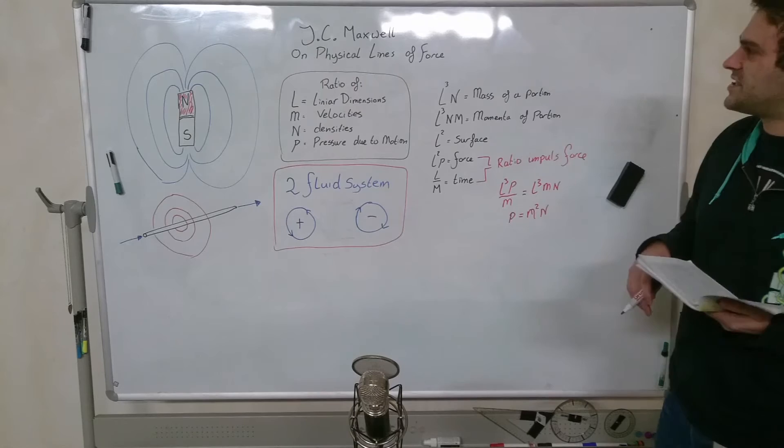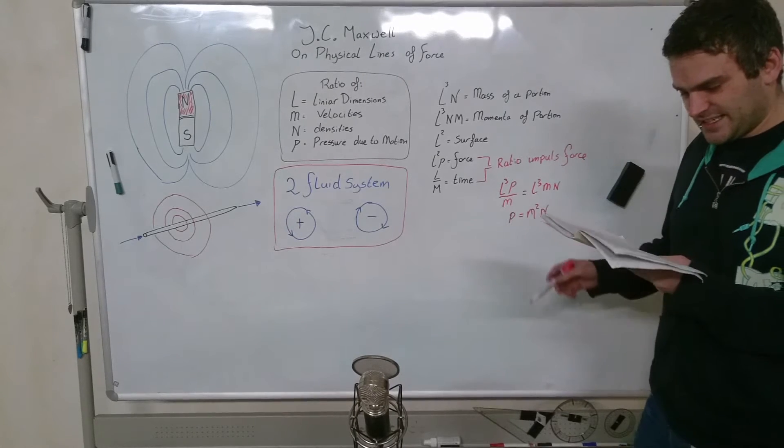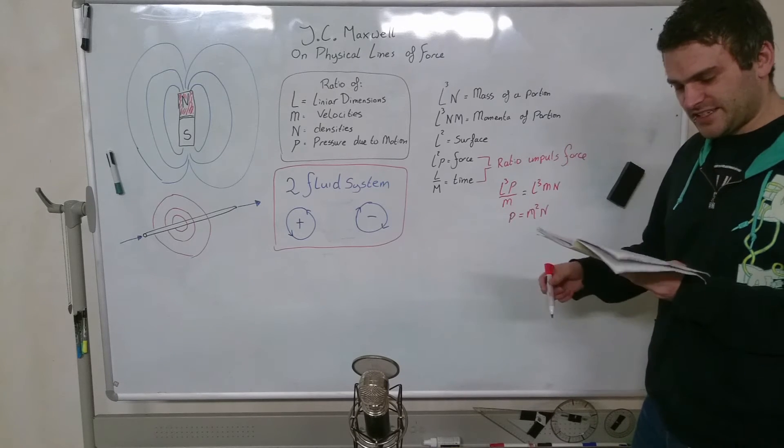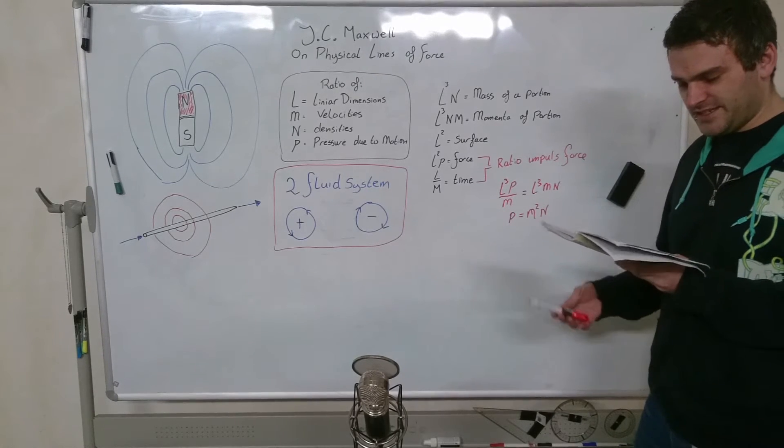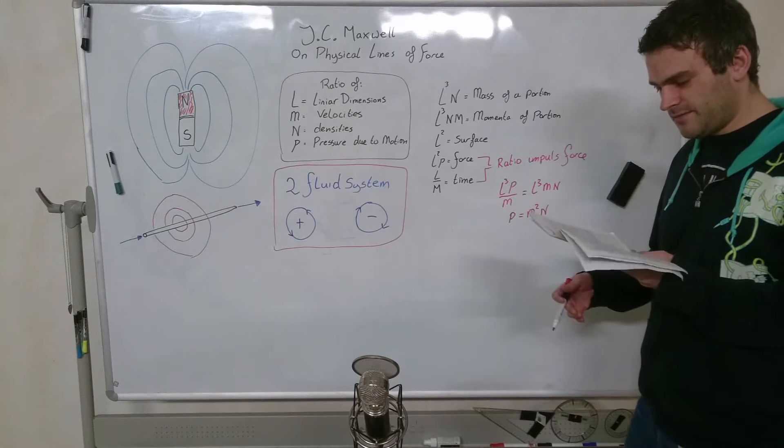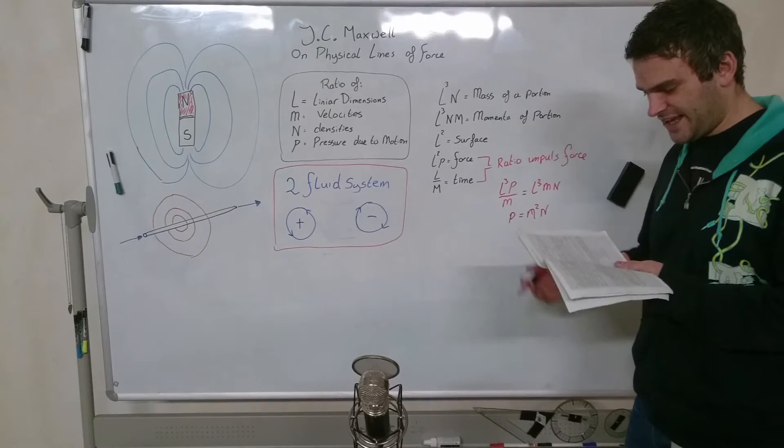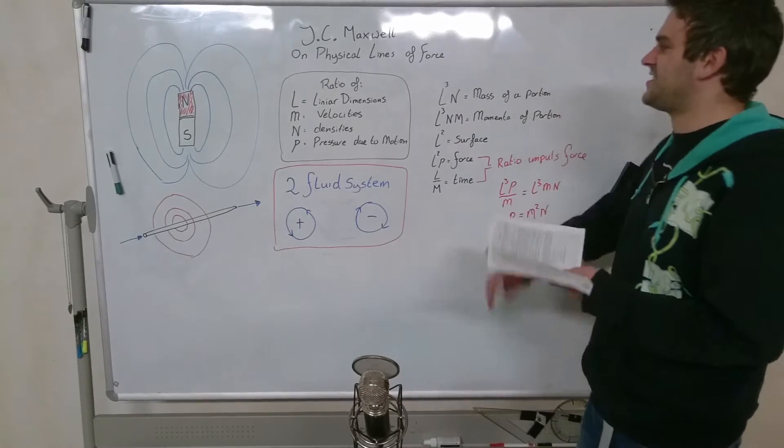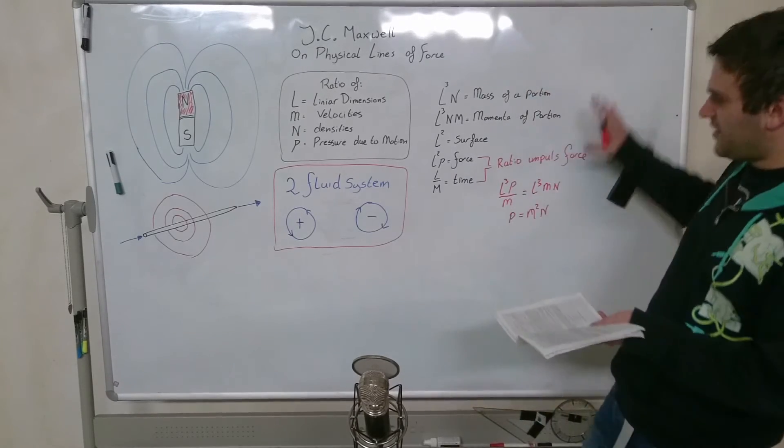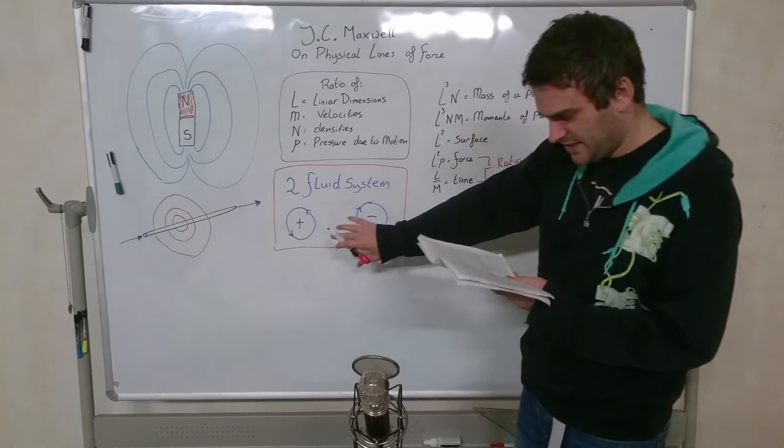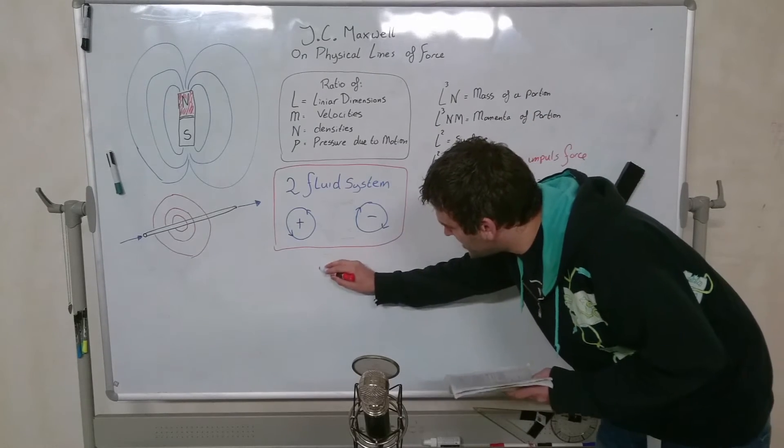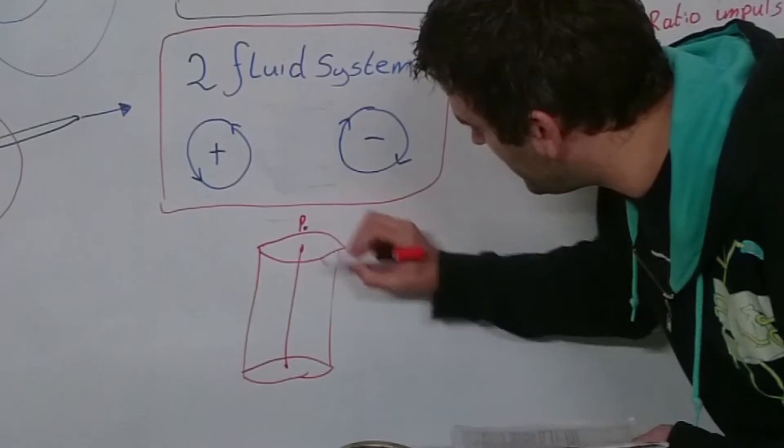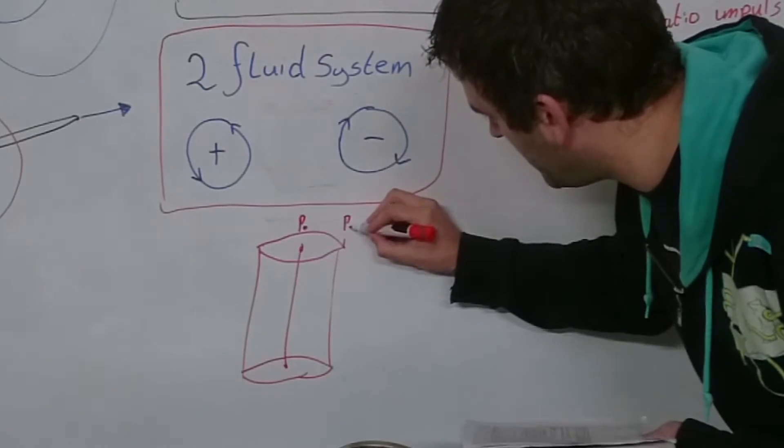Next up in his proposition number one, he says that in a circular vortex revolving with uniform angular velocity, if the pressure at the axis is P0, that at the circumference will be P1 equals P0 plus a half rho V squared, where the small rho will be the density. Okay, we're going to write this down. We can draw a vortex with a center, which we can call P0. And at the edge, we can call it P1.